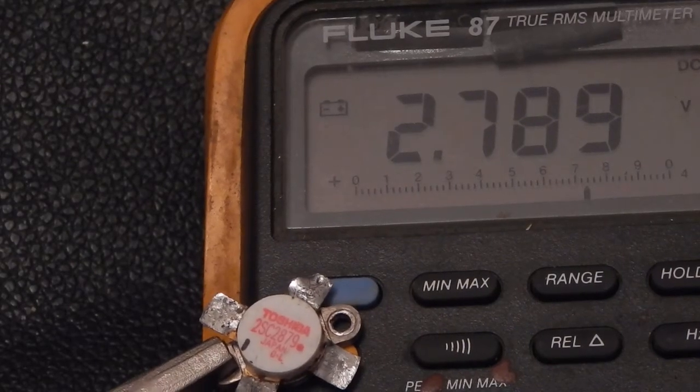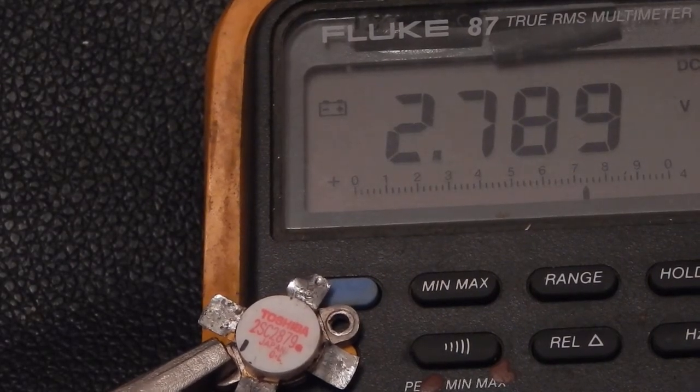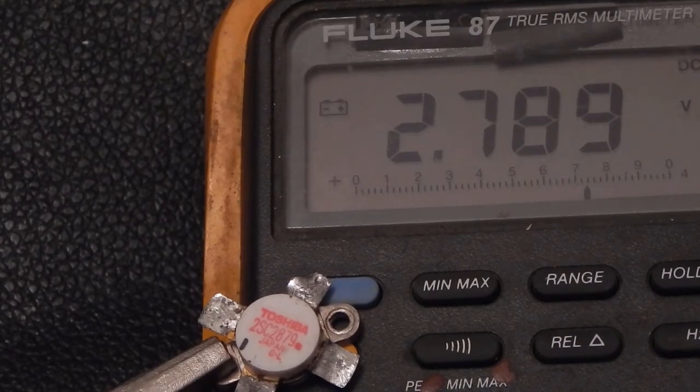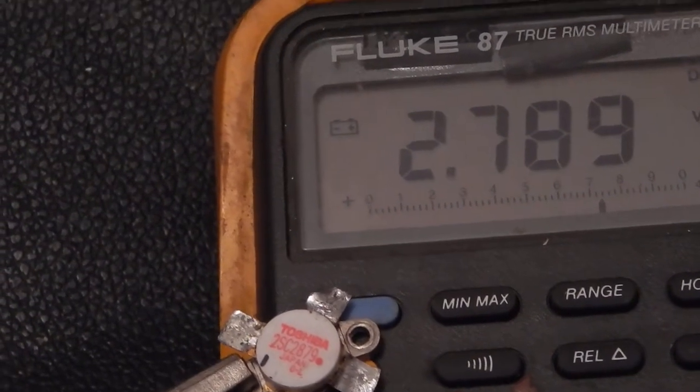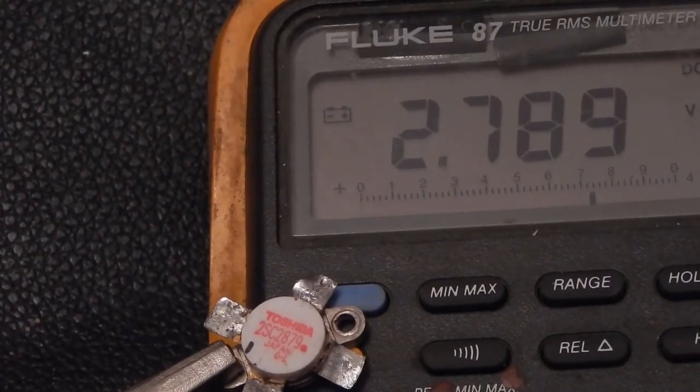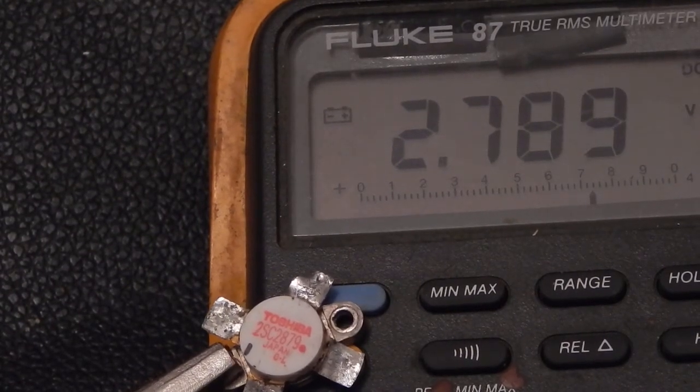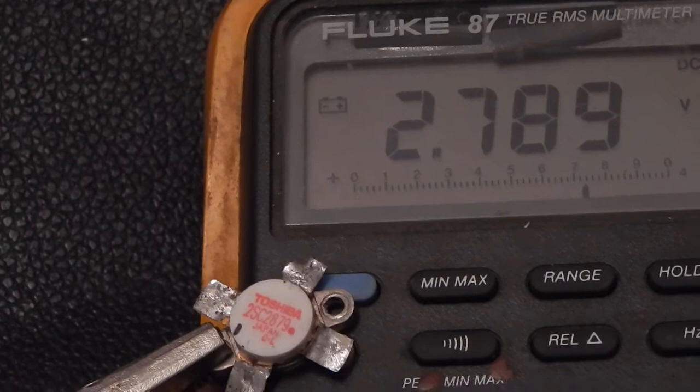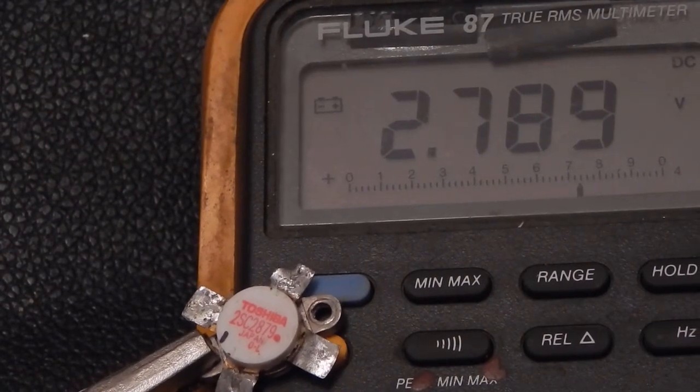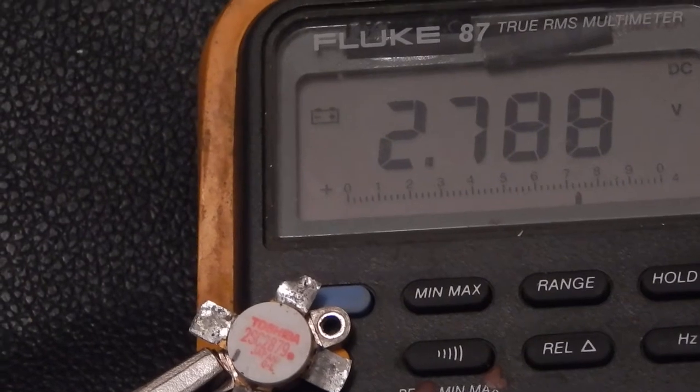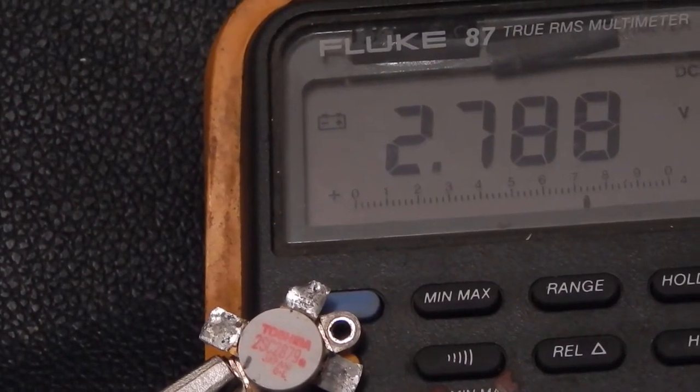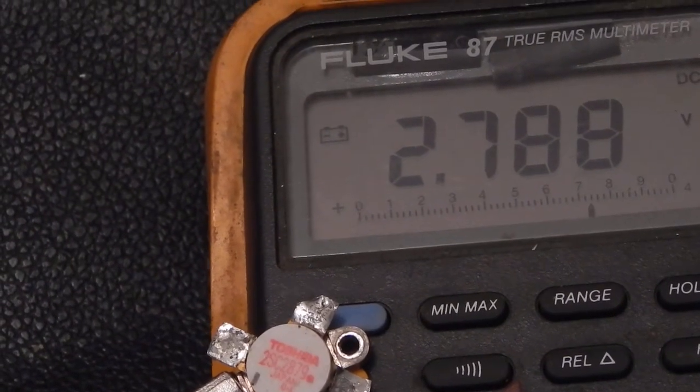A few months ago I bought an ALS 500 that had very anemic output, so I pulled these 2879s out. They're Toshiba red dots and one of them was bad. I stuck in some new DEI 2879s and that changed the output from very anemic to just anemic. I ended up getting rid of that ALS 500 and getting an SGC power cube. So these sat in the drawer for a few months. I decided I was going to go ahead and try to get rid of them now.